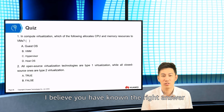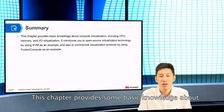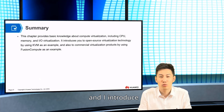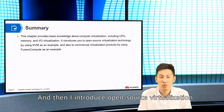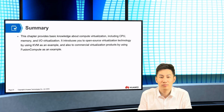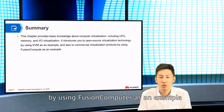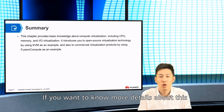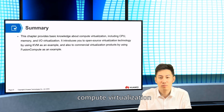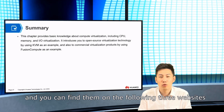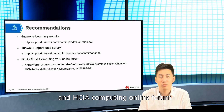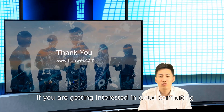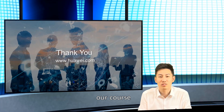I believe you have known the right answer. Now let's do a summary. This chapter provides some basic knowledge about compute virtualization. I introduced CPU virtualization, memory virtualization, and IO virtualization. Then I introduced open source virtualization using KVM as an example, and introduced commercial virtualization using Fusion Compute as an example. If you want to know more details, you can find them on three websites: the Huawei e-learning website, the Huawei support website, and the HCIA Computing online forum. If you are getting interested in cloud computing, follow our course. See you, bye!